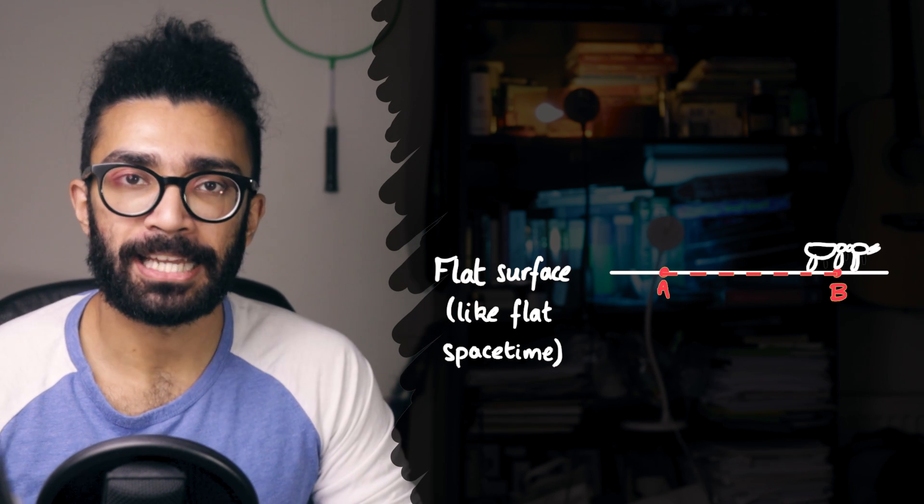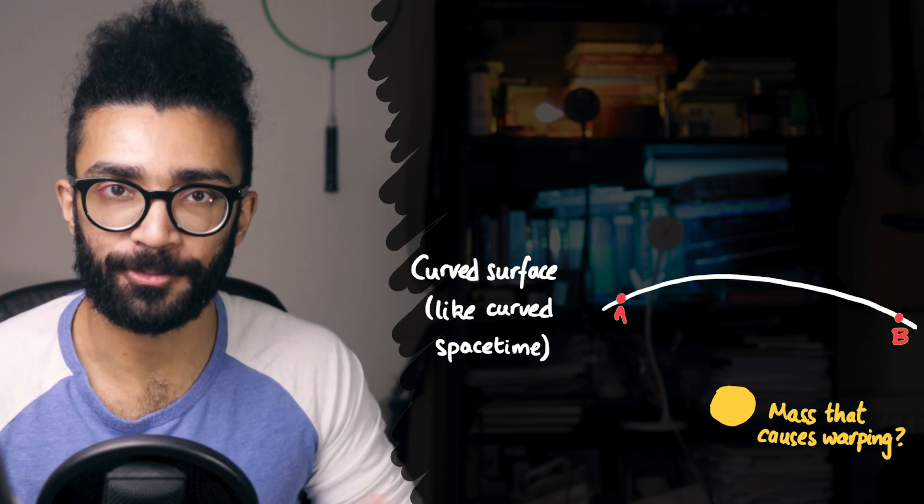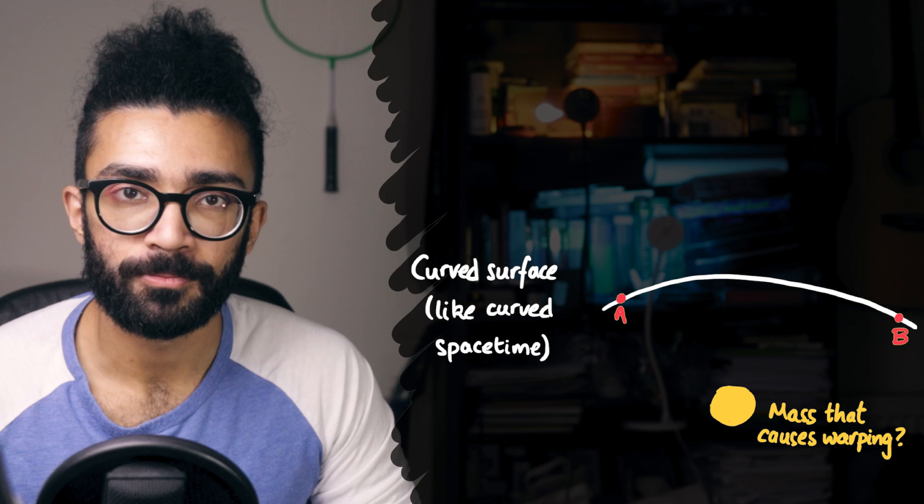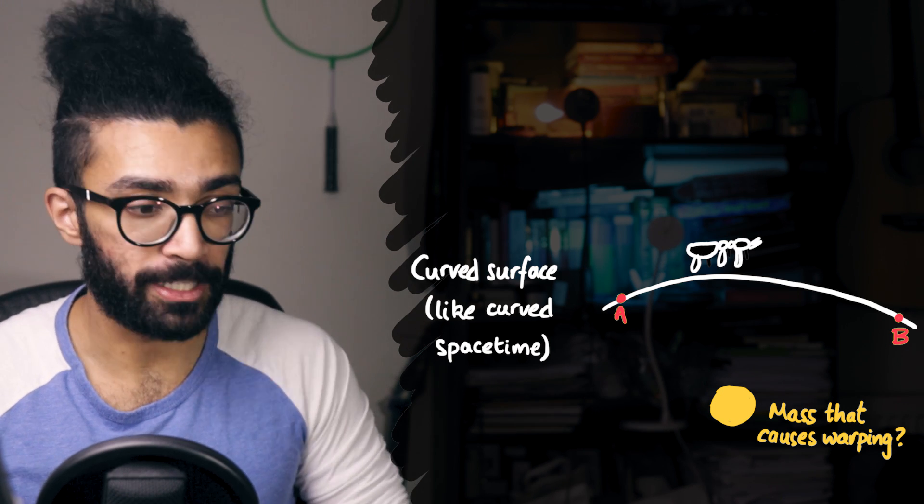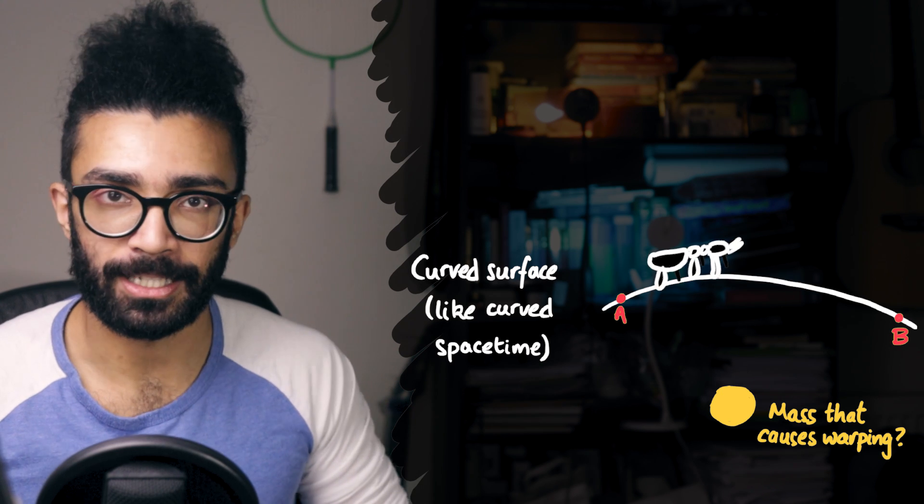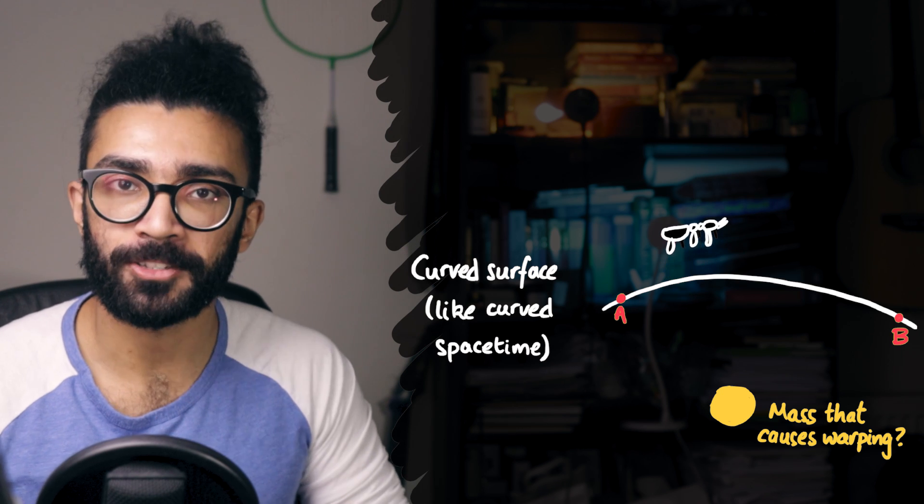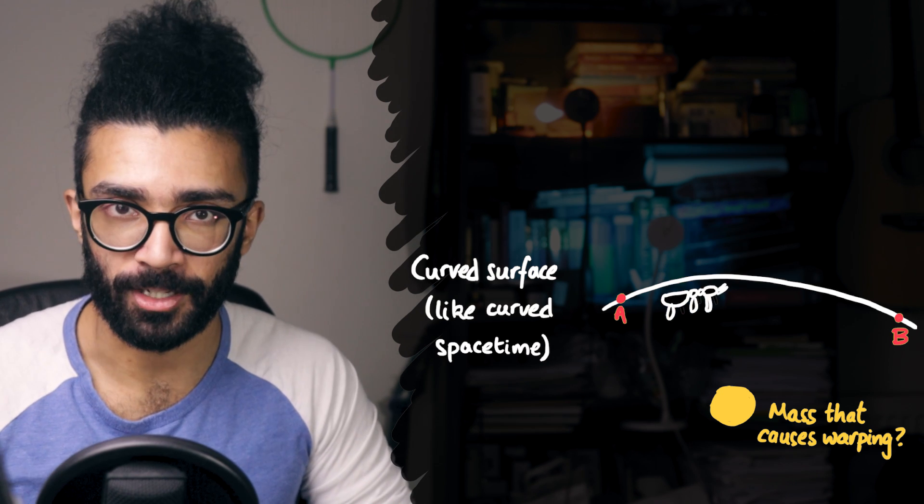But let's say that the surface that the ant is now sitting on is somehow warped, so that it's on the outside of a sphere. The surface is now curved, but the ant still follows the same rules. It can move in what it thinks is the forward and backward direction, or the right and left direction, or, of course, any combination of those two directions.